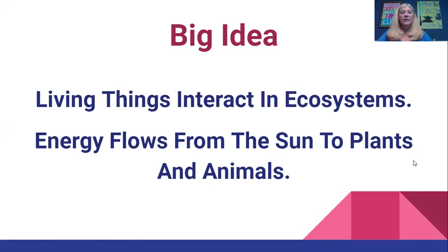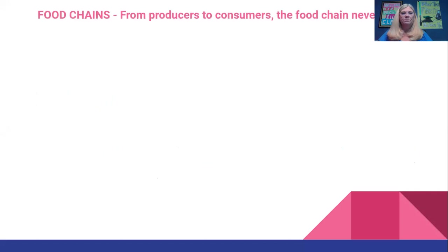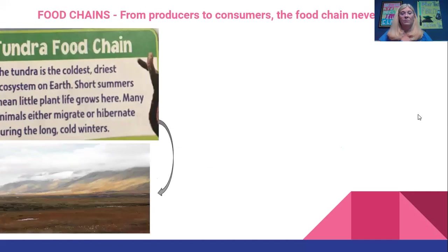Big idea: living things interact in an ecosystem and energy flows from the sun to the plants and the animals. We're talking a lot about food chains today — from producers to consumers, that food chain never stops.